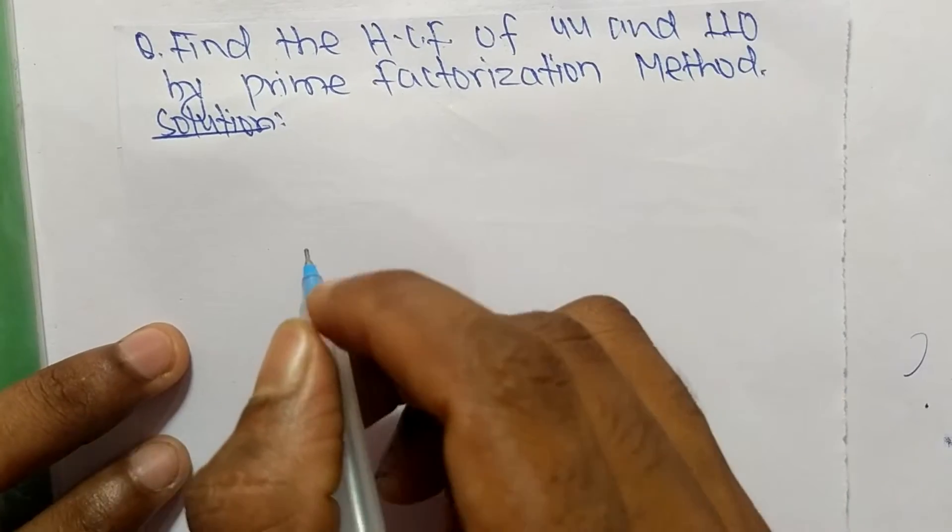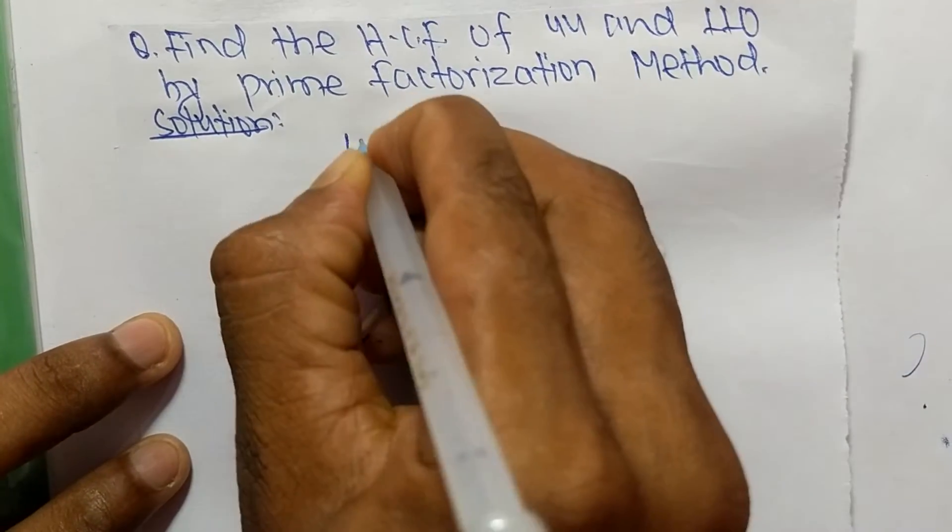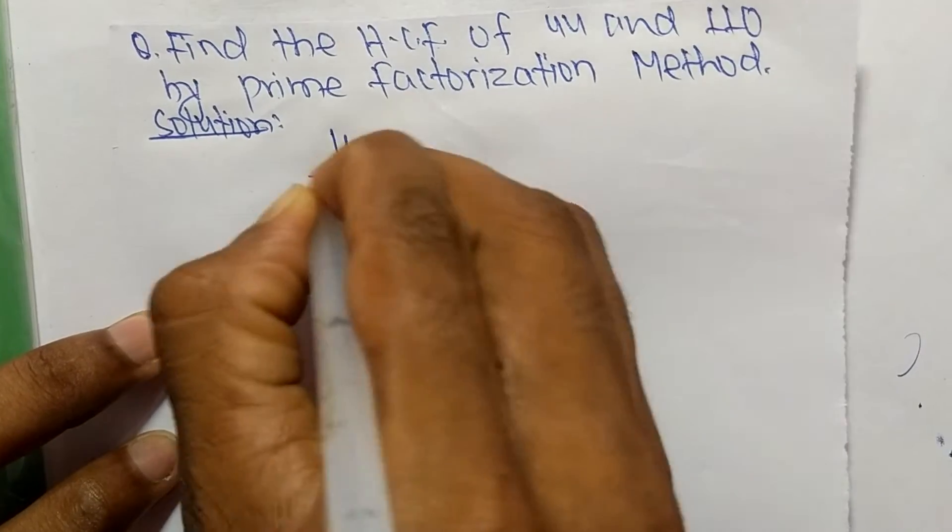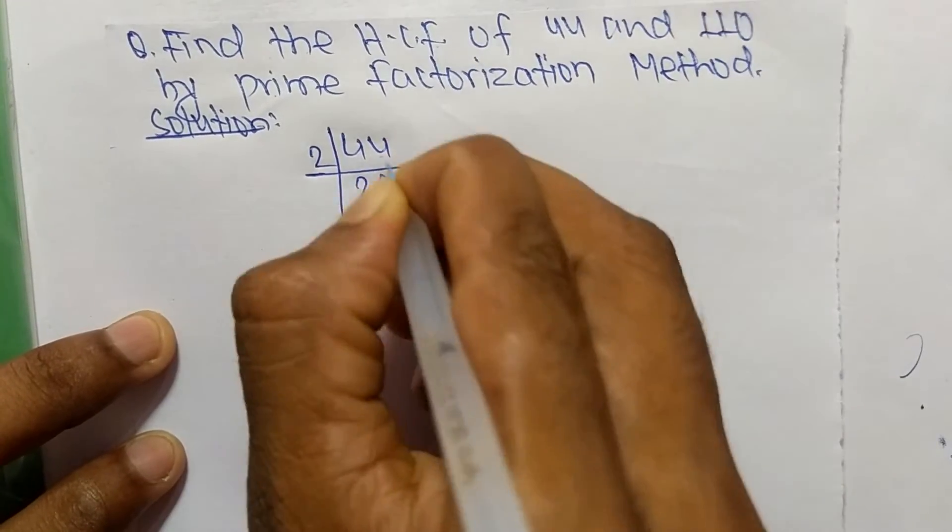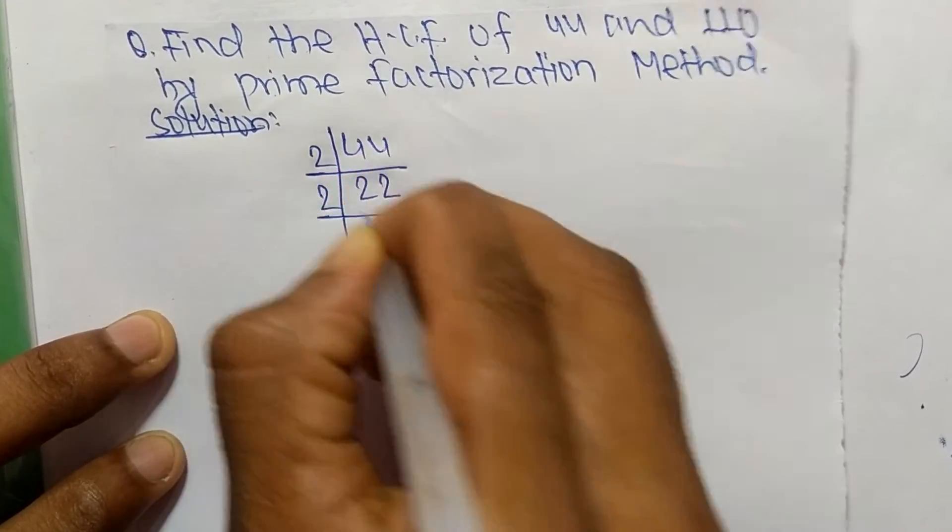First, we find out the prime factors of 44. So it is 2 times 22 means 44, 2